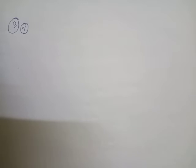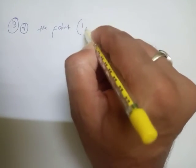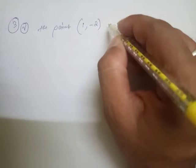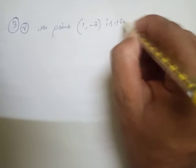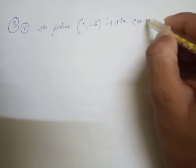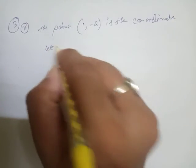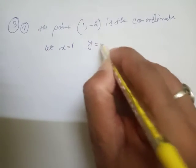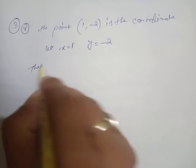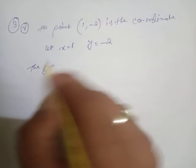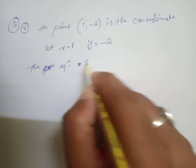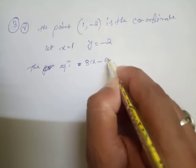Question number 3(v): The given coordinates are 1 comma minus 2. So we write down that the point (1, -2) is the coordinate. Let x equal to 1 and y equal to minus 2. Now the equation is 3x minus 2y equal to 7.